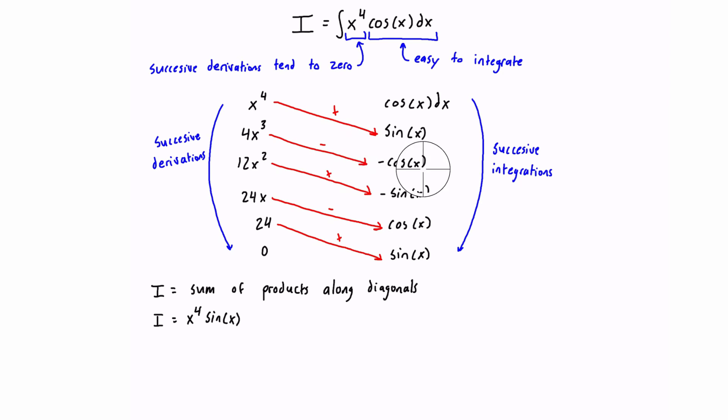And then for the next term here, we have plus. But there's also going to be a negative in here that will be factored into that. So we're going to add a negative number times a positive number. So we're actually going to add a negative number. So that will be minus 12x squared times sine of x.